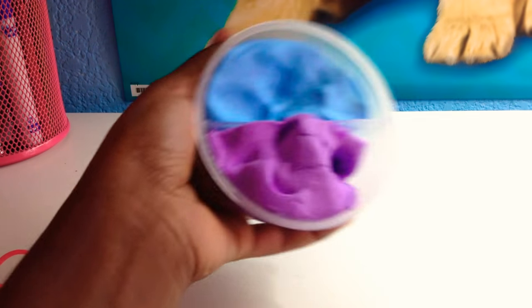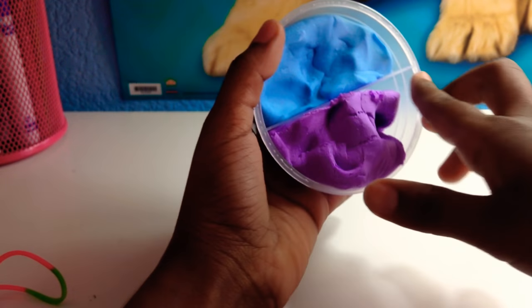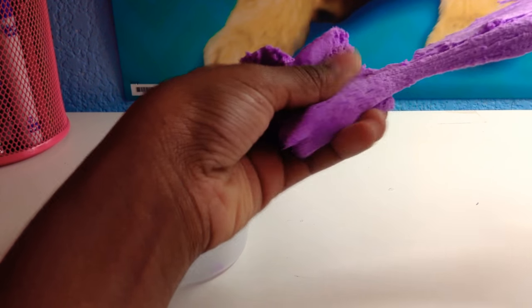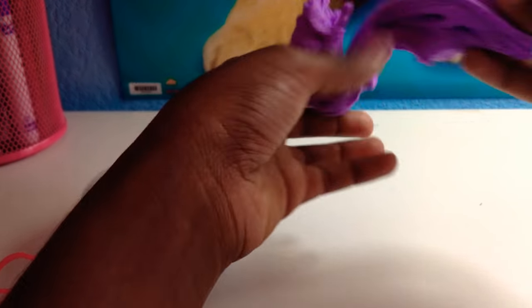It comes with two colors, purple and blue. It says it stretches and bounces. It kind of stretches. It feels like butter slime or clay slime.